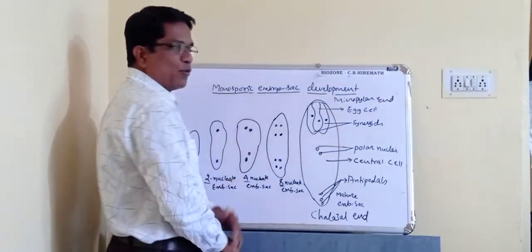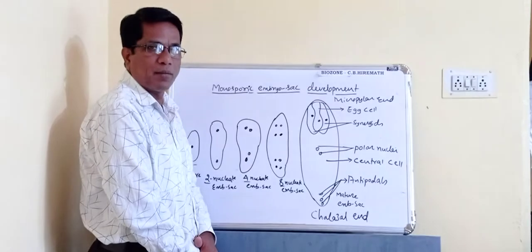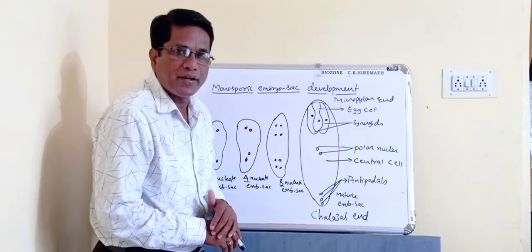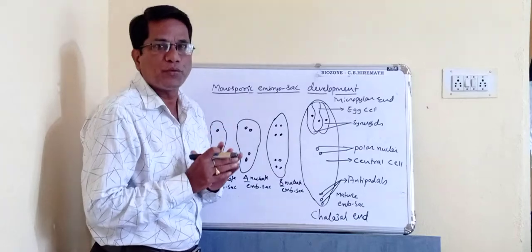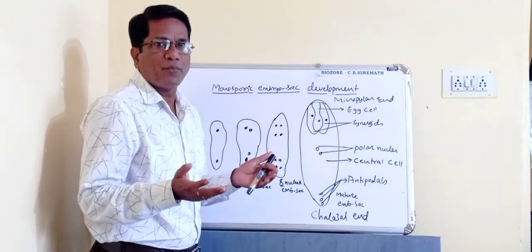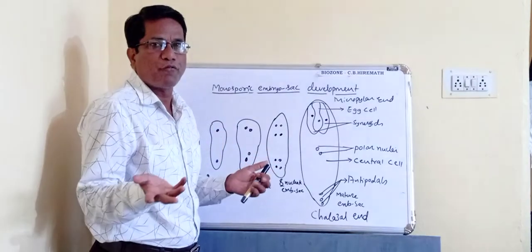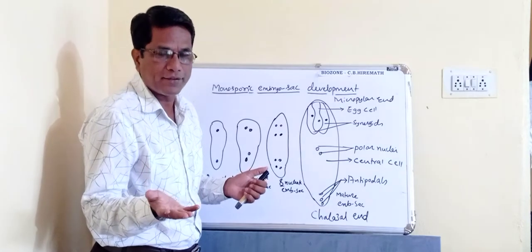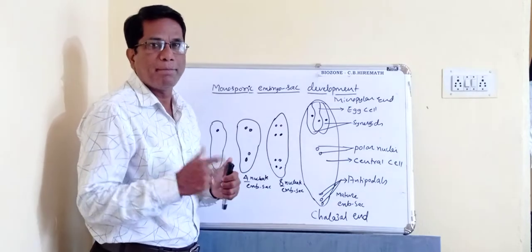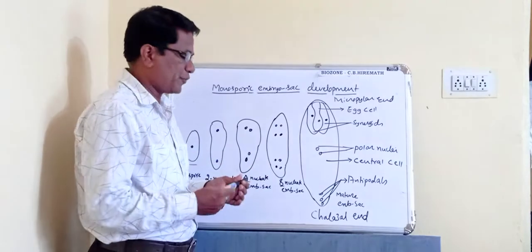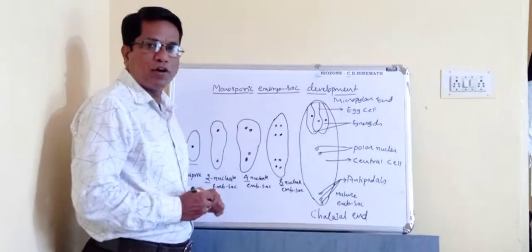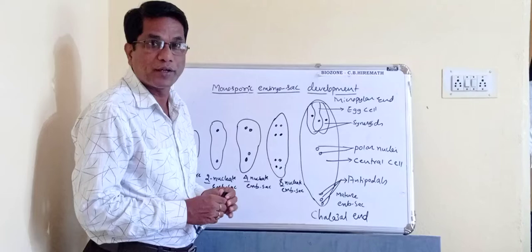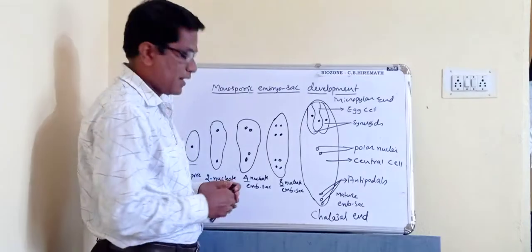Now let us study about the monosporic embryo sac development in angiosperms. In the last video I explained megasporogenesis — the process of formation of megaspore from megaspore mother cell through meiosis. That process ends in the formation of four megaspores, and out of four megaspores one megaspore remains functional.